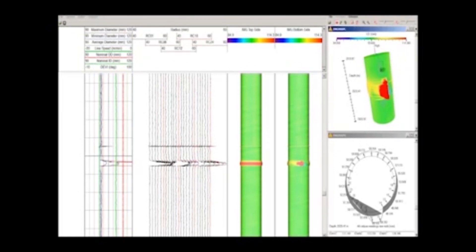The tool string is run in the well with the down-view camera operating to get an overview of the well condition and hardware. The caliper is then logged up with results displayed in real-time.